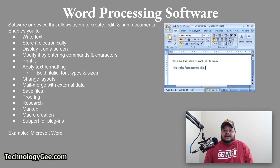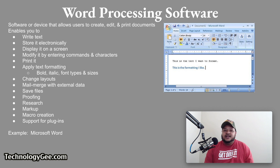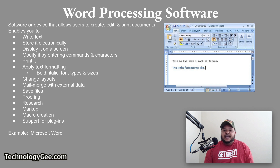A word processor is software or a device that allows users to create, edit, and print documents. It enables you to write text stored electronically, display it on screen, modify it by entering commands and characters from the keyboard, and print it. Word processing programs can apply text formatting such as bold, italic, and different fonts and font sizes, change layouts, mail merge with external data, and save files. Proofing, research, markup, and macro creation features are often included, and support for plugins enables word processing programs to perform more tasks. Microsoft Word is an example of word processing software.